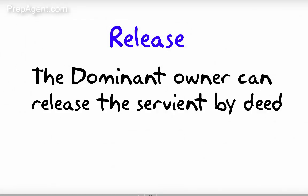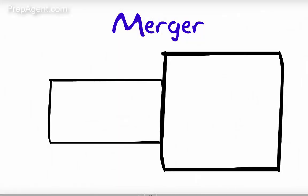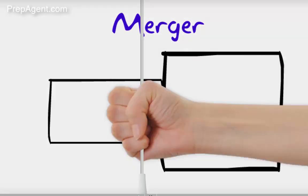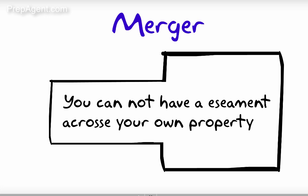Let's talk about how to end easements. Easements can be terminated in several ways, including an agreement or release. The person who possesses the easement, known as the dominant tenement, agrees to give it up or release it to the person across whose property the easement exists, the servient tenement. You can also end an easement by merging — A has an easement across B's property, B buys A's property, and the easement disappears, as you would not need an easement across your own property.